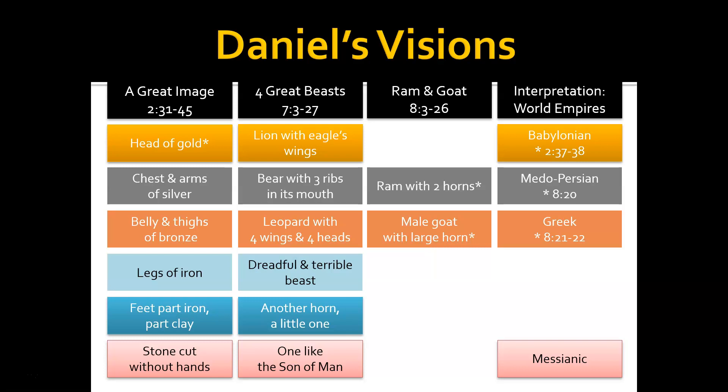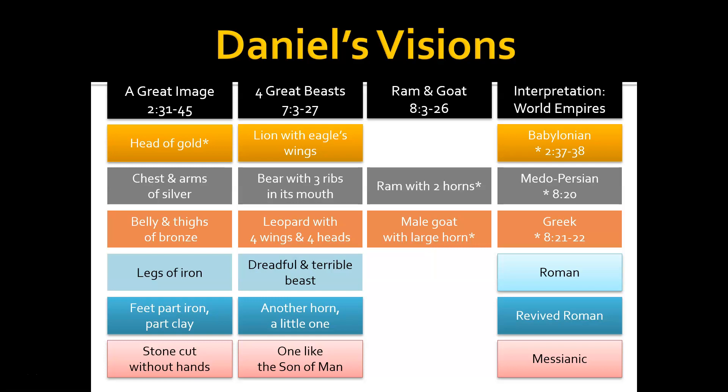The legs of iron and the dreadful and terrible beast are not specifically named. We know the Babylonian empire is specifically stated in Daniel chapter 2, and the Medo-Persian and Greek empires are mentioned by name in chapter 8. But these other kingdoms are not mentioned by name. We believe the kingdom that followed the Greek empire was the Roman empire. There also seems to be a gap that points forward towards the end times, referring to a revived Roman empire — something similar in power and strength to the original, with some connection to it.